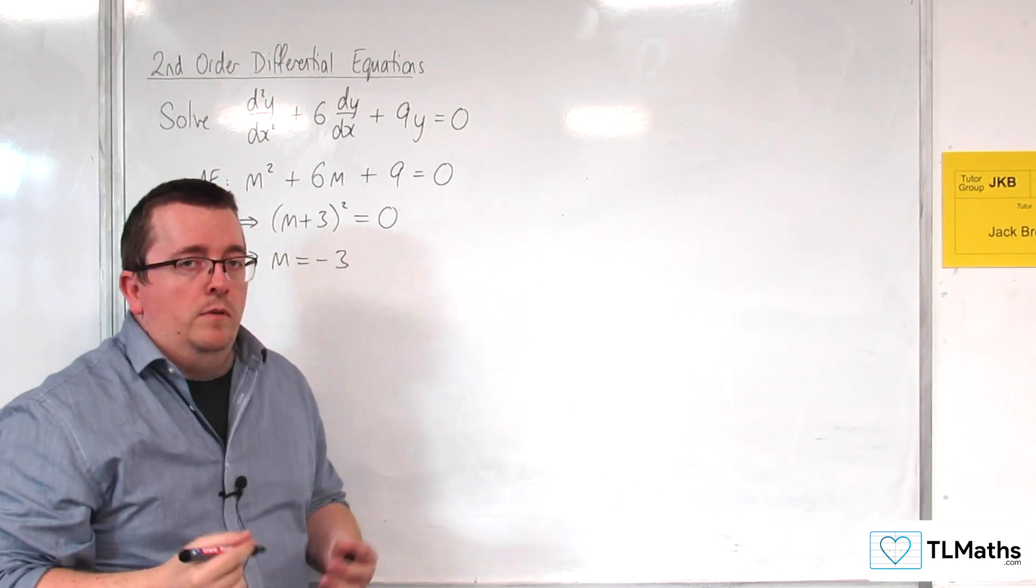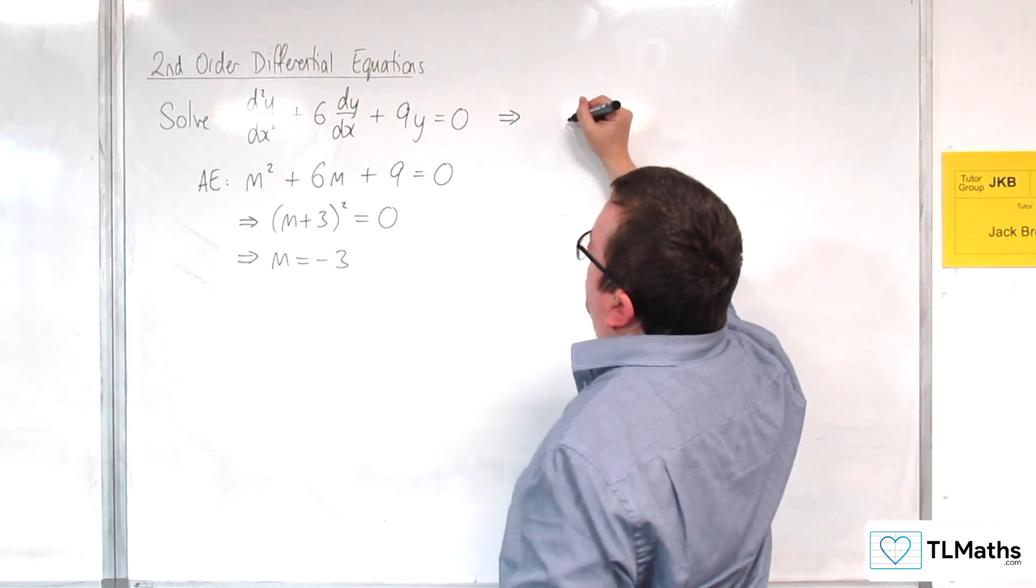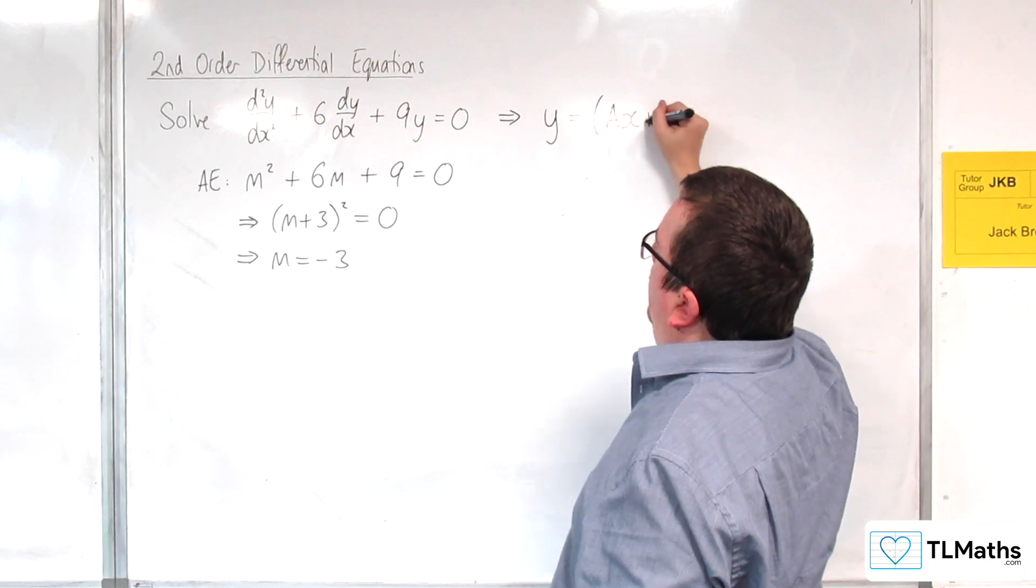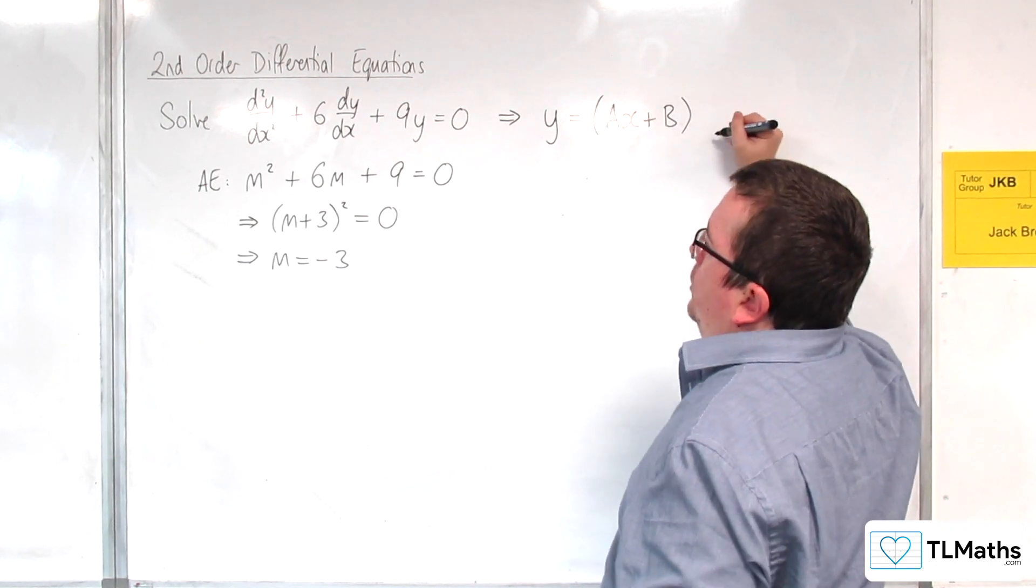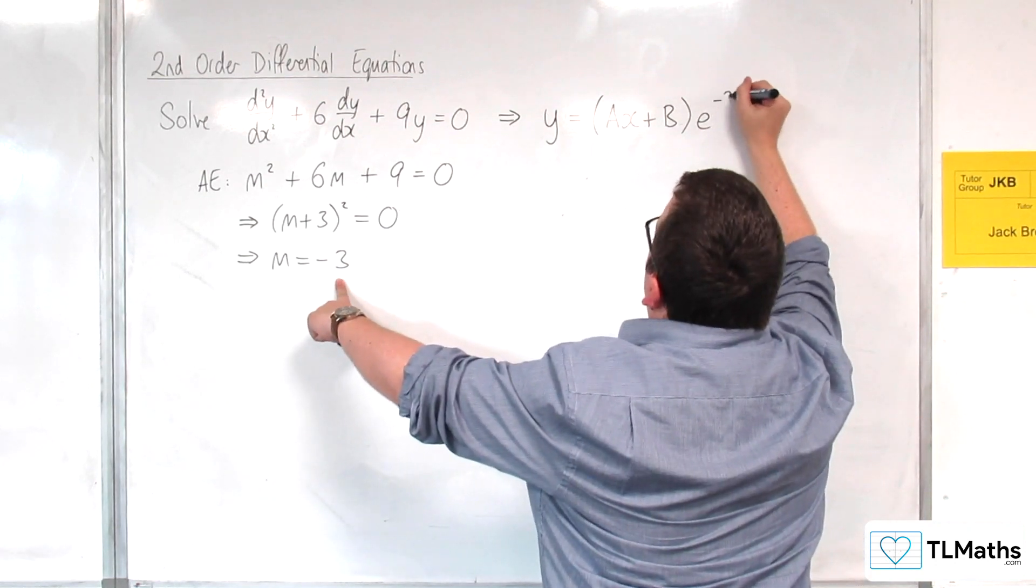So then the general solution to this differential equation will be y = (ax + b)e^(mx), where a and b are constants.